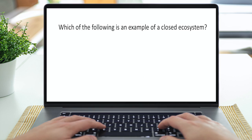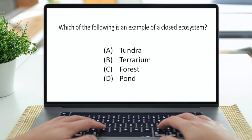The life science category covers topics like genetics and heredity, life cycles, cells, and ecosystems. Questions also cover health topics like nutrition and communicable diseases. Here's a typical problem you might see: 'Which of the following is an example of a closed ecosystem? A, tundra. B, terrarium. C, forest. Or D, pond.'